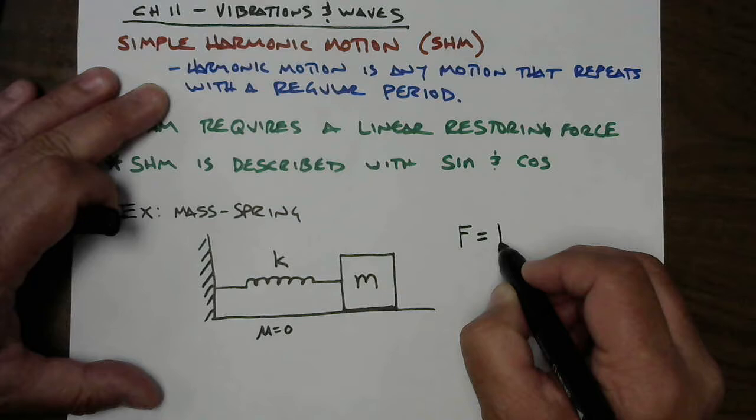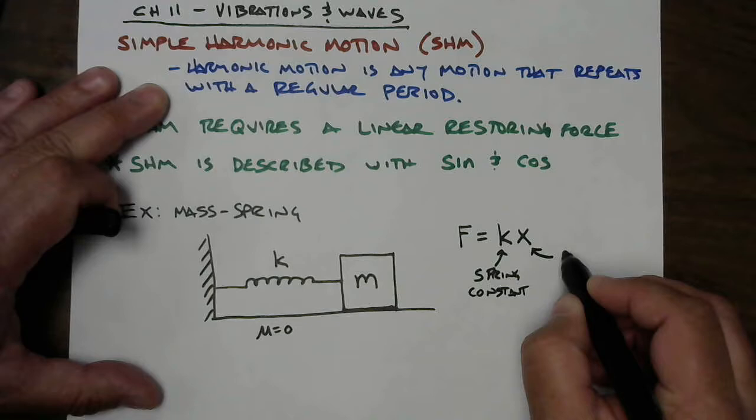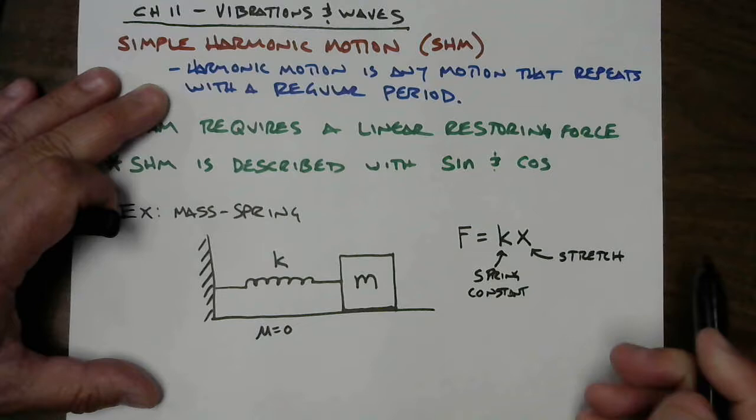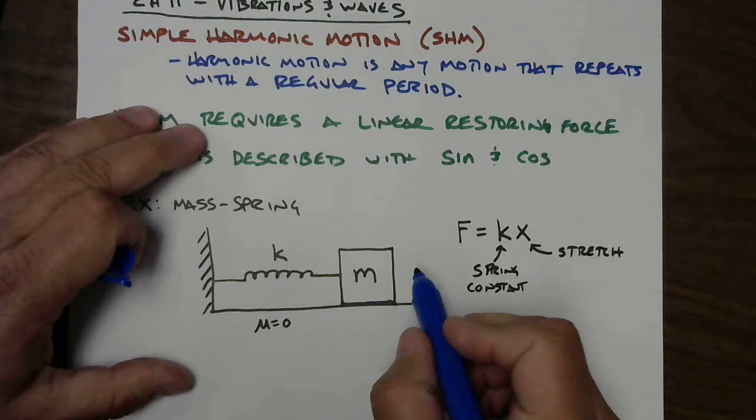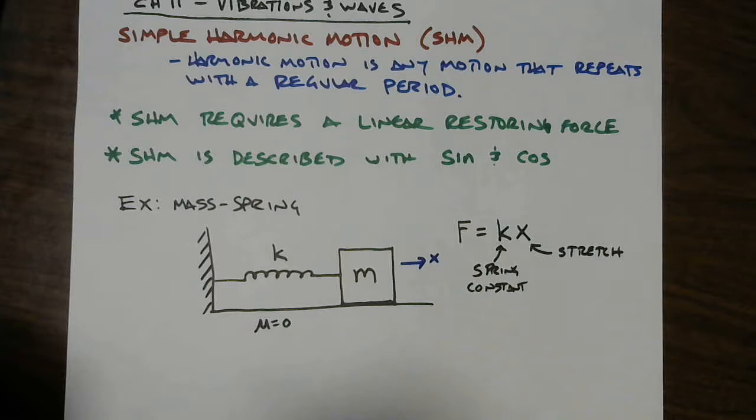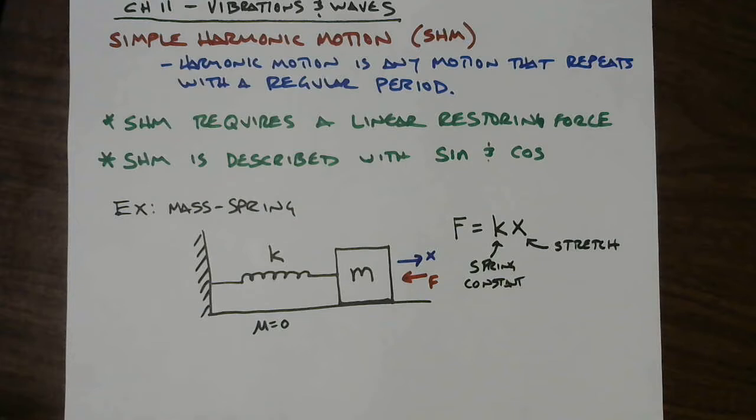We're going to connect it to the wall with a spring. The spring is characterized by a spring constant k. Mass is how heavy or massive the box is, and k is how stiff or strong the spring is. The restoring force is going to be k times x, where k is the spring constant and x is the amount of stretch or compression.